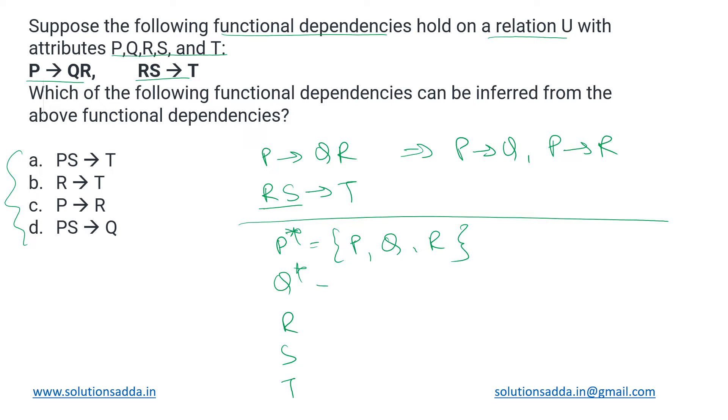The closure of Q is Q itself. Closure of R is R. And as we know from here, closure of RS is giving us T, so that is separately because we are taking two attributes on the left hand side. All of the remaining are deriving themselves.